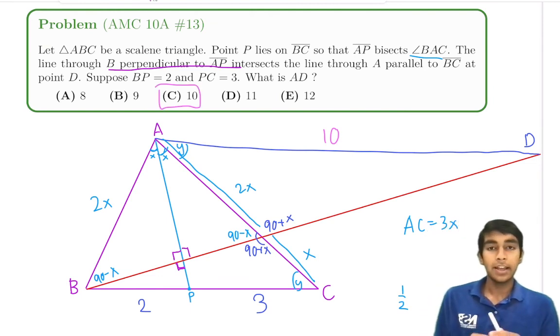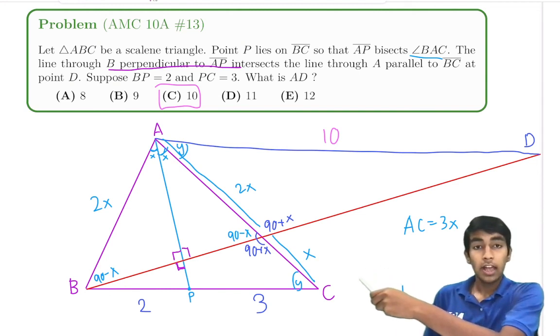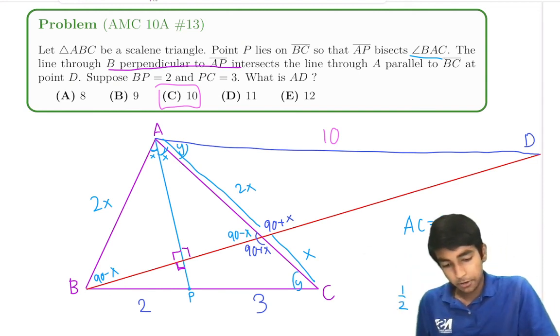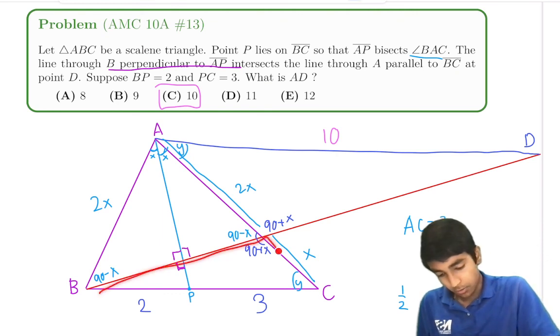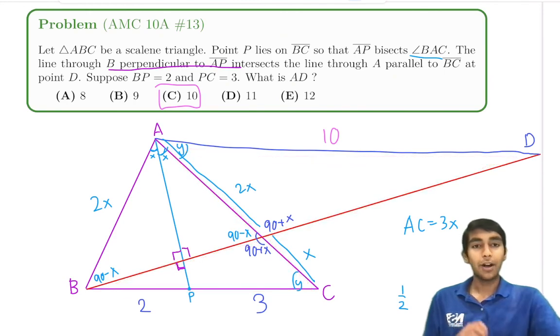To summarize, what we did is we angle-chased a little bit, used angle bisector theorem, and then noticed the congruent triangles, and then we found the bottom pair of similar triangles, this one and this one, and that was enough to finish. Thanks for watching!